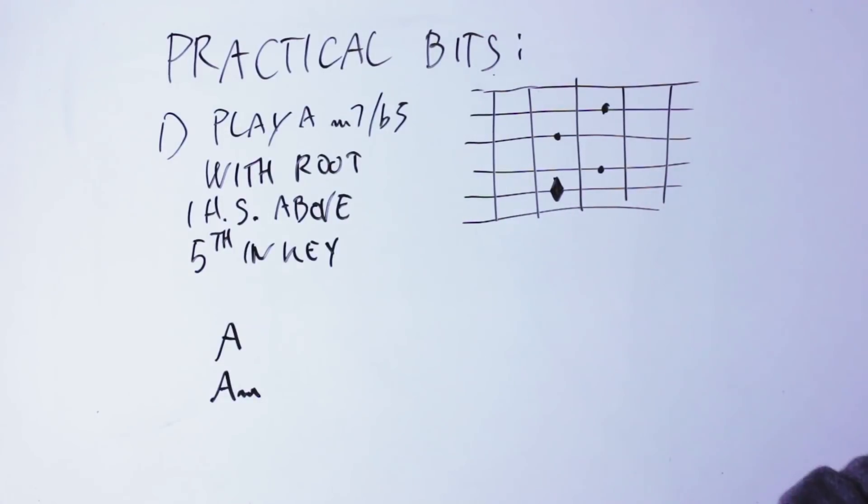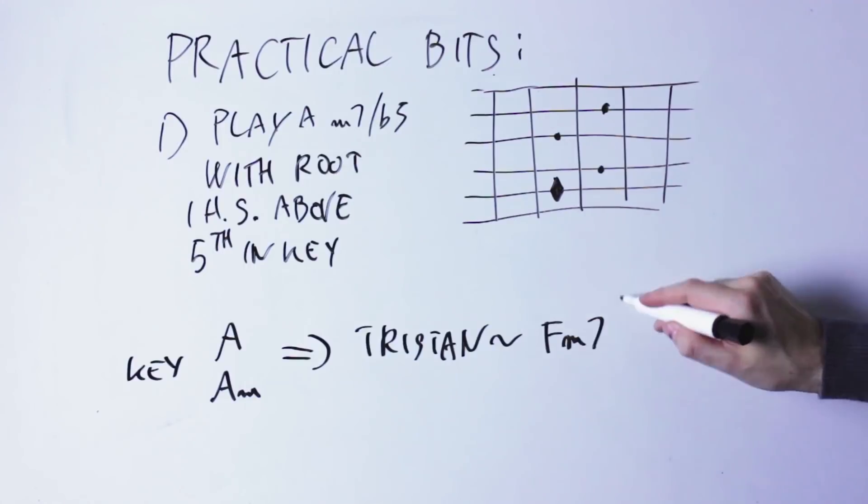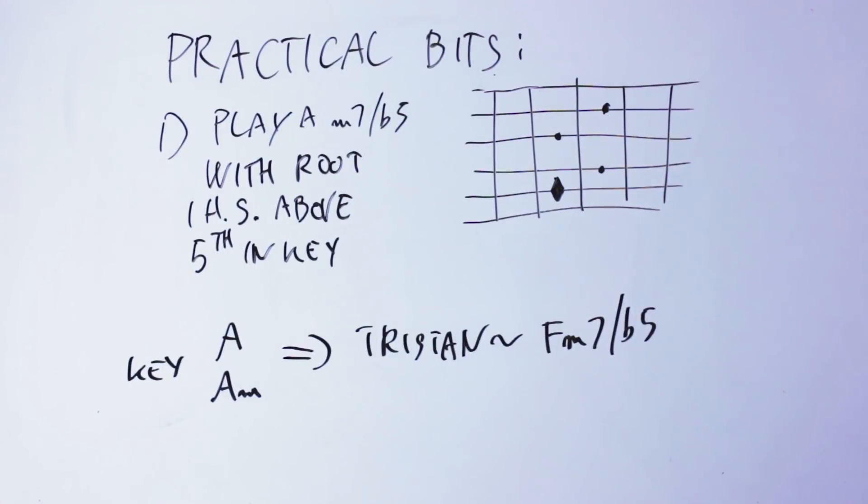In the key of A or A minor, this chord will be exactly the same as an F minor 7 flat 5 chord, F being a half step above the fifth degree of the scale, which is E.